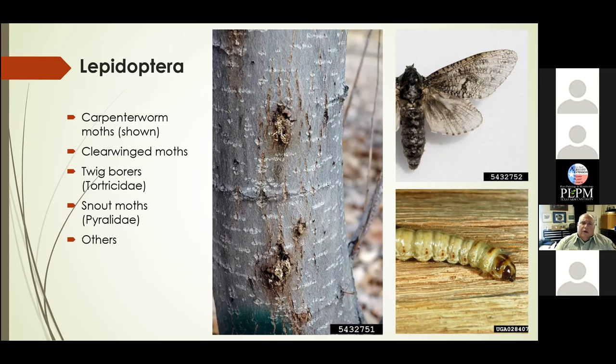You might notice some damage on your tree from the carpenter worm. This is a member of the Lepidoptera order — our moths and butterflies. Lots of different moths cause damage on trees, and unless it's a very severe infestation, there's really not a lot to stress about or concern ourselves with in terms of treatment. The moth is pretty easy to identify in its adult form, and its larval form is very caterpillar-like.